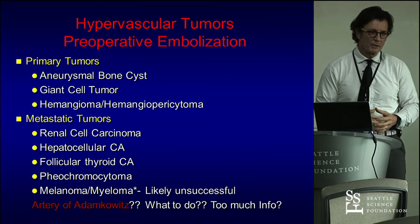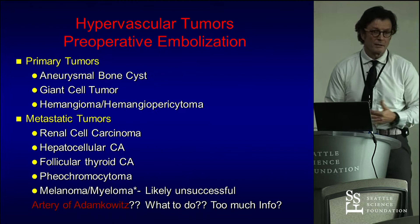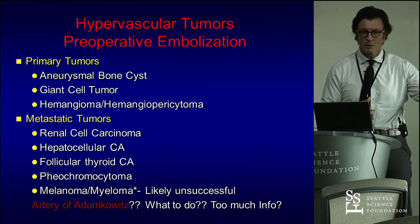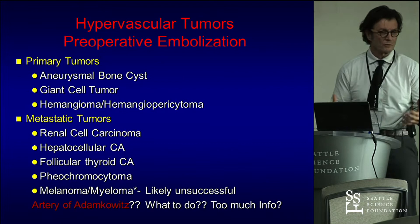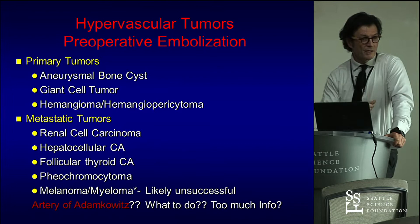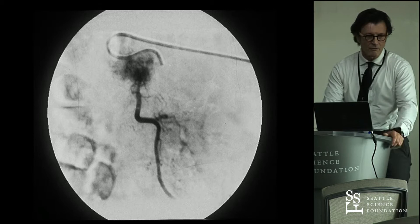When it comes to preoperative embolization, there's always the issue of the artery of Adamkiewicz. Where is it? What's the risk of spinal cord infarct? What do you do if the artery of Adamkiewicz is at the level you want to embolize? Sometimes you get information you don't want to know — the interventionalist goes in to embolize a vascular tumor and tells you the artery of Adamkiewicz is right there, which changes your entire surgical plan. Hypervascular tumors and embolization is an important concept.